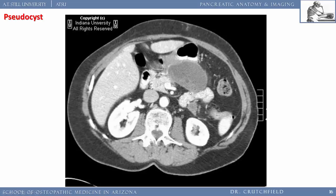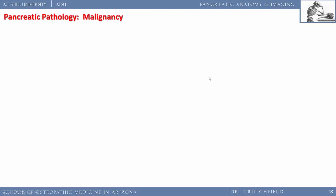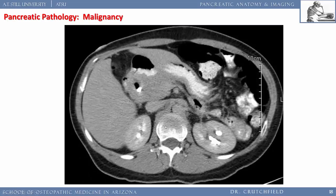To drain a pseudocyst, we usually wait six weeks for it to organize. If drainage is needed, we create a hole directly through the posterior wall of the stomach into the pseudocyst. Chronic calcific pancreatitis — usually from alcoholism — can also be seen on plain abdominal film where arrows highlight calcium deposits in the pancreas.